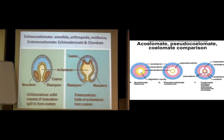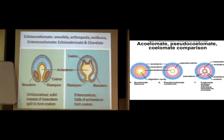Schizocoelmates are those which have solid masses of mesoderm that split to form this particular coelom. And when you see enterocoelmates, you are going to have the archenteron cavity which has grown a lot compared to the other. The coelomic cavity is being formed from it — that's the reason you name them as enterocoelmates.